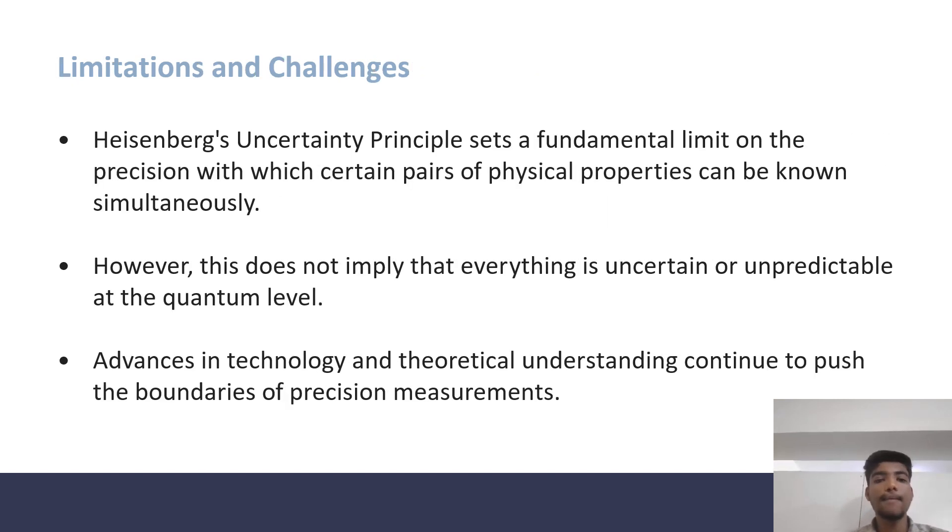Limitations and Challenges. Heisenberg's Uncertainty Principle sets a fundamental limit on the precision with which certain pairs of physical properties can be known simultaneously.